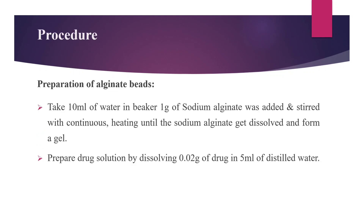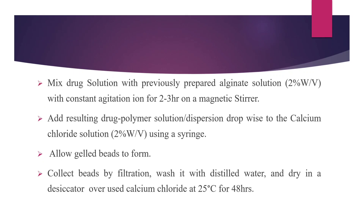Preparation of alginate beads: Take 10 ml of water in a beaker. 1 gram of sodium alginate is added and stirred with continuous heating until the sodium alginate gets dissolved and forms a gel. Prepare the drug solution by dissolving 0.02 grams of drug in 5 ml of distilled water. Mix the drug solution with the previously prepared alginate solution (2% W/V) with constant agitation for 2 to 3 hours on a magnetic stirrer.